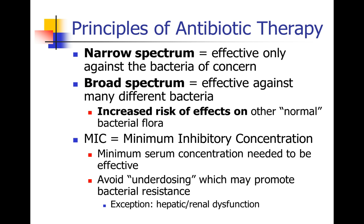When we dose antibiotics, our goal is to achieve a minimum inhibitory concentration — the serum concentration needed to kill the bacteria of interest. When you underdose antibiotics, you may only be killing the weakest bacteria, and the stronger bacteria are selected out to continue reproducing. The only time it might be appropriate to underdose antibiotics is in people who have hepatic or renal dysfunction and have a metabolic concern.